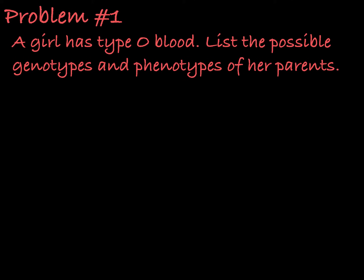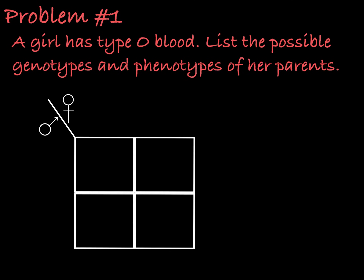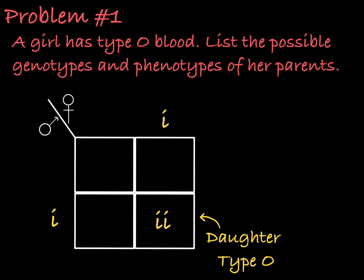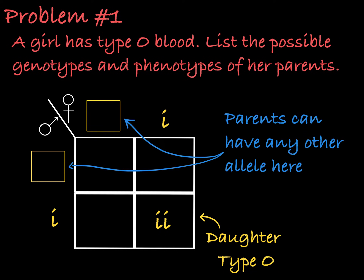First we need to know the genotype of this girl. We know she has type O blood, meaning she must have the genotype little i little i. Given that she has two little i alleles, we know that she receives one little i from each of her parents. This means that the parents could have any other alleles to fill their genotypes.